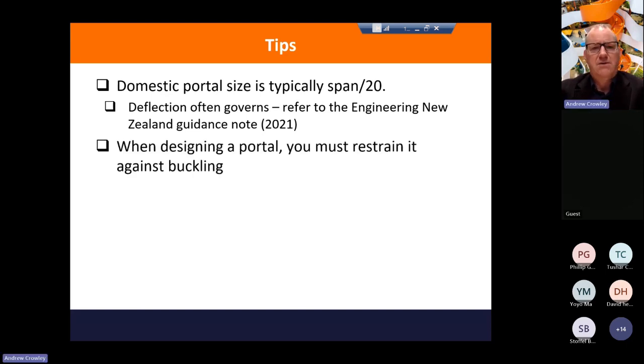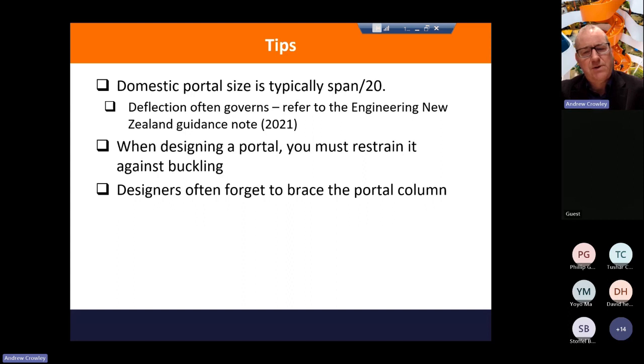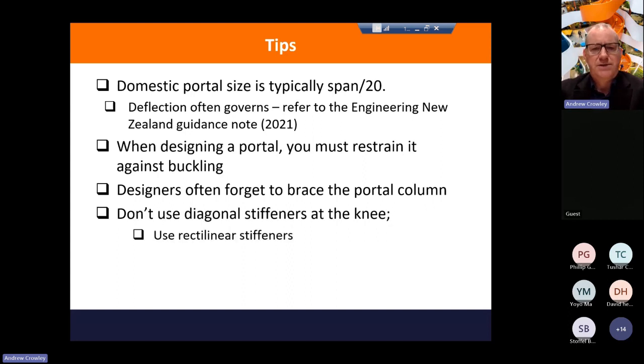Don't forget to restrain your frame against buckling. So in plane, it's nice and stiff, but out of plane it has very little stiffness. They need to be tied into another structure. Don't forget to brace the portal column as well. Don't use diagonal stiffeners as I mentioned before. Use the rectilinear stiffeners.